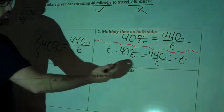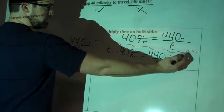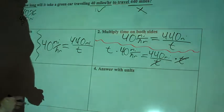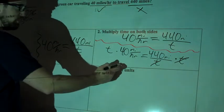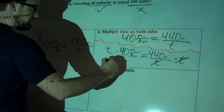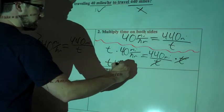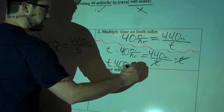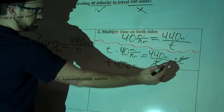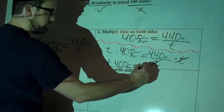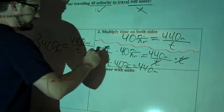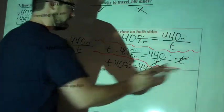What's going to happen over here is the 440 miles divided by T, and the T on the top here are going to cancel out. So now I'm left with, over here I have T times 40 miles per hour equals, and the only thing left on this side since the T's were canceled out, is 440 miles.